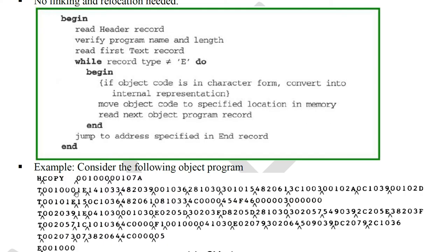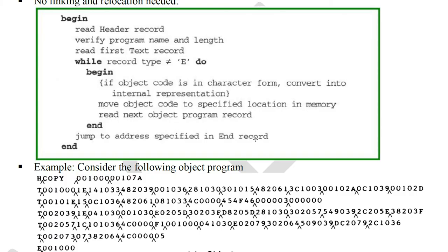Move the object code to the specified location in memory. For the first text record, the address is 1000, then place the object code at continuous locations. Then read the next object program record. Continue processing through subsequent records until the end record. When the end record is reached, the address mentioned — for example, 1000 — is used as the execution start address.